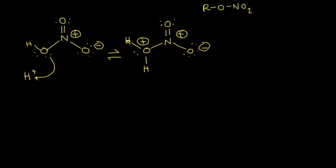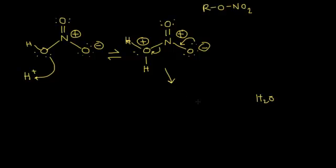In the next step, we can see that we have water as a leaving group. A lone pair of electrons on the oxygen moves in to form a new pi bond, kicking these electrons off onto the oxygen, and water leaves. Now we have nitrogen double bonded to one oxygen and double bonded to another oxygen, with a plus one formal charge. This is called the nitronium ion. Since the nitrogen is positively charged, it wants electrons and will function as an electrophile in the next step.